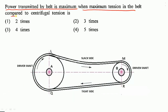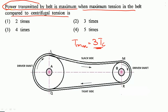Power transmitted by belt is maximum when the maximum tension in the belt compared to centrifugal tension is what? For maximum power transmission, the maximum tension T_max should be equal to 3 times the centrifugal tension. So option 2 — 3 times the centrifugal tension — is the correct option.